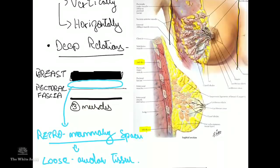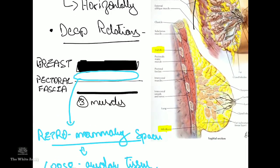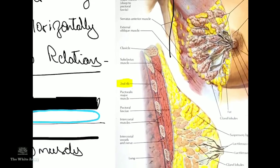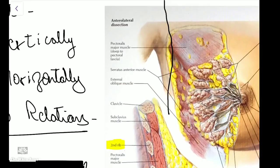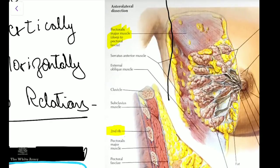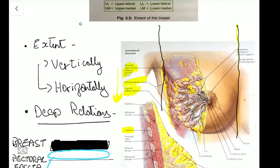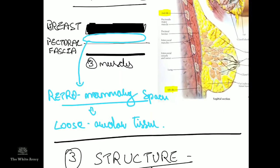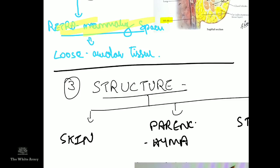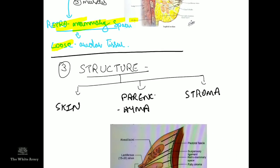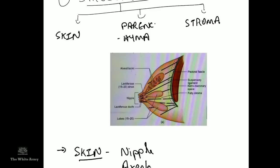Below the breast is the pectoral fascia, and beneath it the breast lies over three muscles: pectoralis major, serratus anterior, and the external oblique muscle. There is a space between the breast and the pectoral fascia called the retromammary space, which contains loose areolar tissue. This allows the breast to move freely over the pectoralis major muscle.